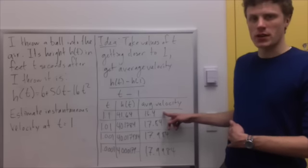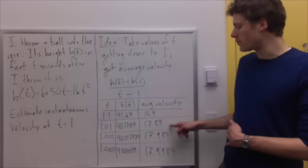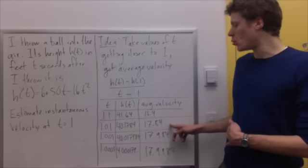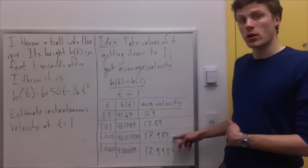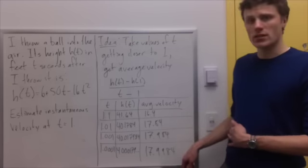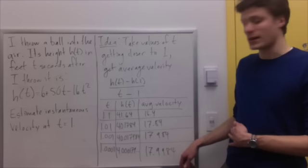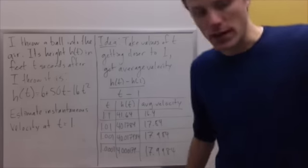Well, when I use the average velocity when time is 1.1, I get 16.4 feet per second. When I let t be 1.01, I get 17.84 feet per second. When I take 1.001, I get 17.984 feet per second. When I take t equal to 1.0001, I get 17.9984 feet per second. Forgive me for a second.